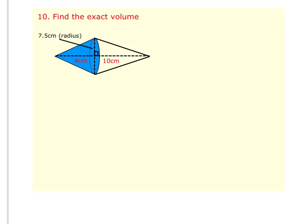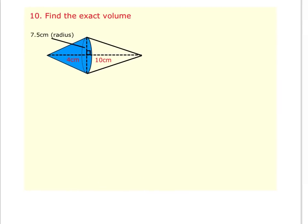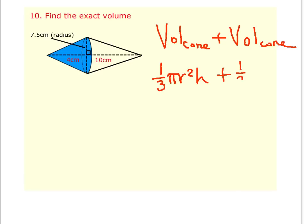So what we're going to do here is we're going to add together the volume of the two cones. So volume of the first cone plus volume of the second cone. When we add those together, it'll give us the volume of that whole figure. The volume of a cone is 1/3 times π r² times the height of the cone, and same thing for the other cone.